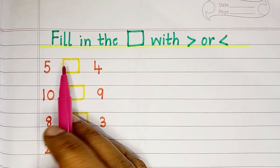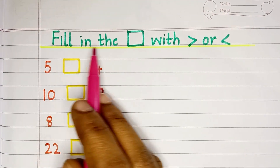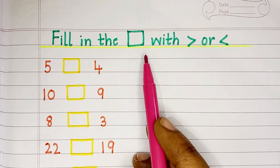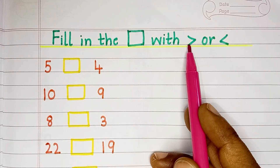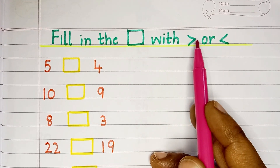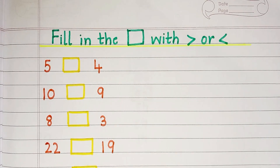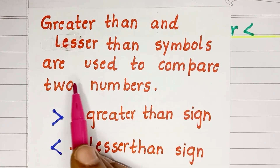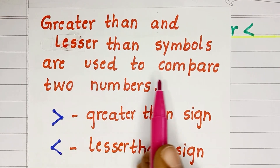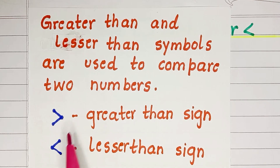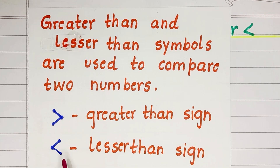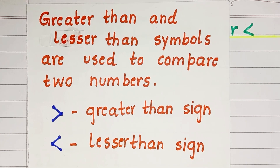Fill in the blanks with greater than or lesser than symbol. Greater than and lesser than symbols are used to compare two numbers. This is greater than sign and this is lesser than sign.